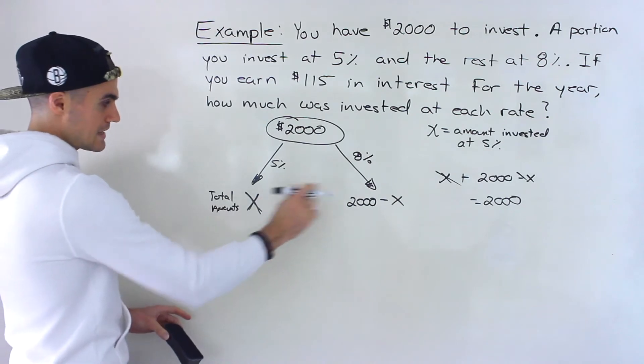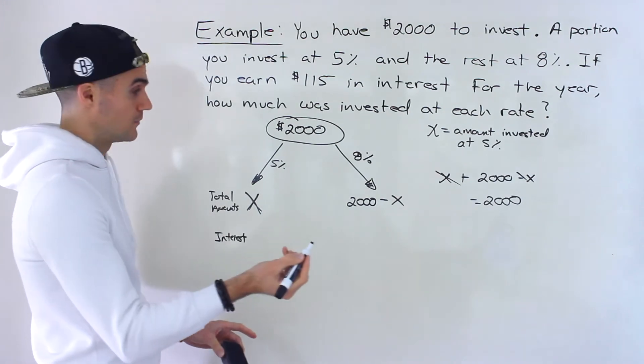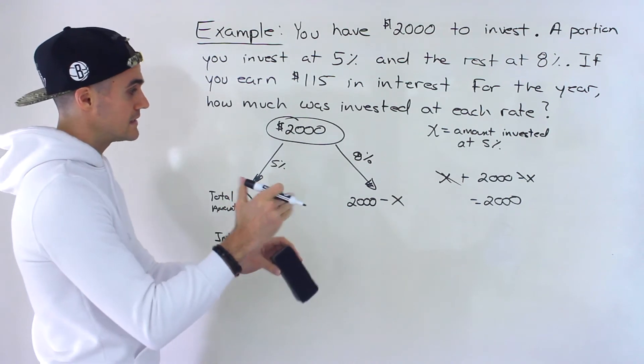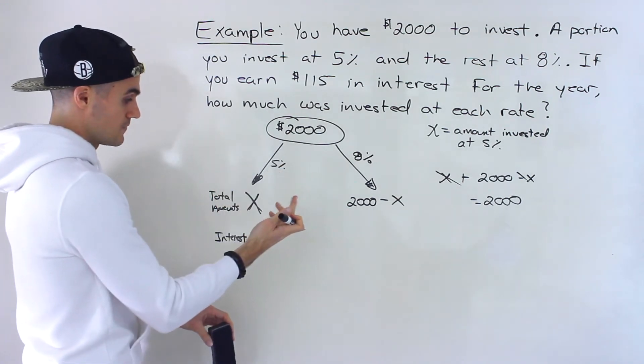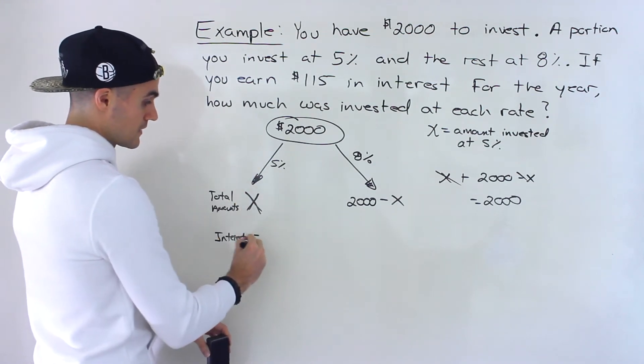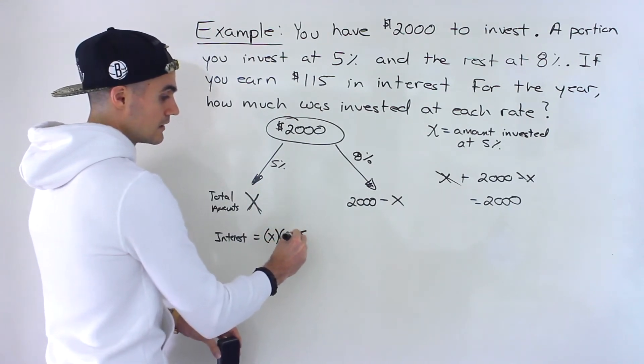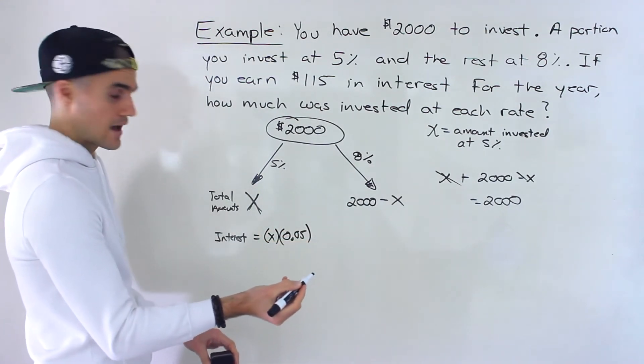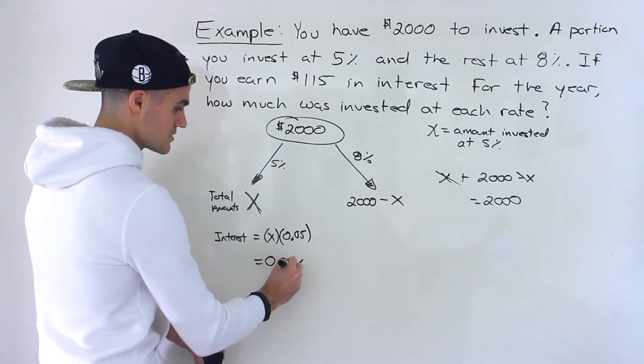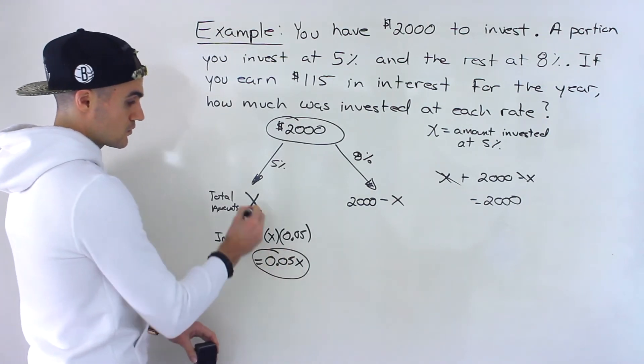But we're dealing with interest. So how can we take these values and create expressions for the interest that we're going to earn? Well, remember, it's going to be the amount invested times the decimal value, the interest rate. So this over here, the interest for this investment is going to be the amount invested times 5%, but that's got to be in decimals like that. And then to make this look a little nicer, we could say 0.05X. So that's the amount of interest that's earned with this investment.